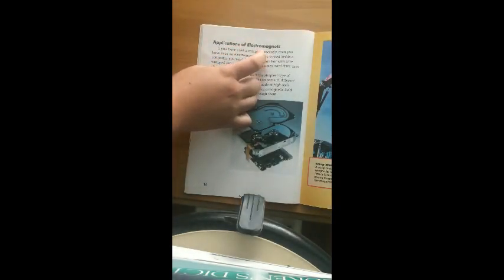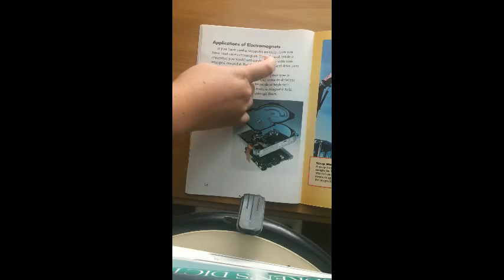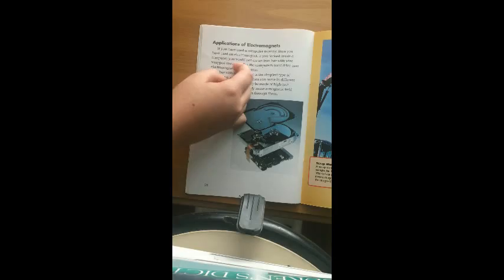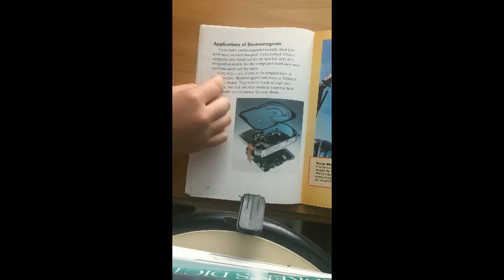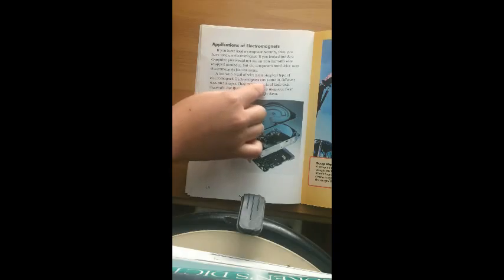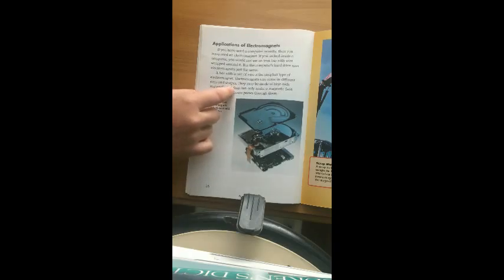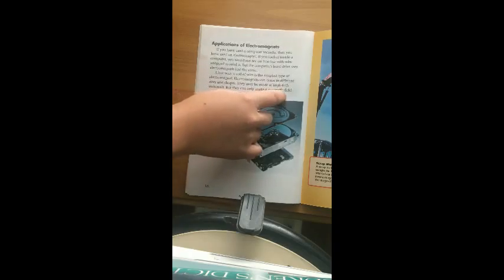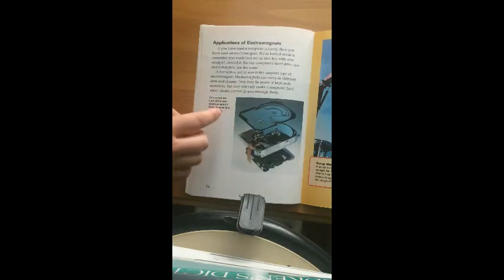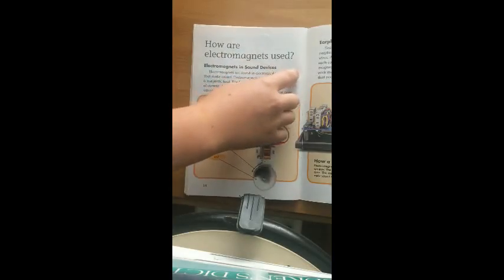Applications of electromagnets. If you have used a computer recently, then you have used an electromagnet. If you looked inside a computer, you would not see an iron bar with wire wrapped around it. But, the computer's hard drive uses electromagnets just the same. A bar with a coil of wire is the simplest type of electromagnet. Electromagnets can come in different sizes and shapes. They may be made of high-tech materials, but they can only make a magnetic field when electric current passes through them.